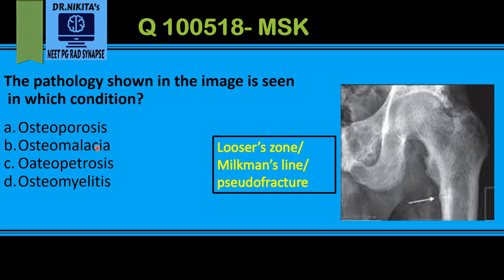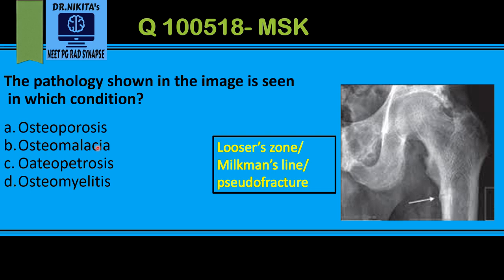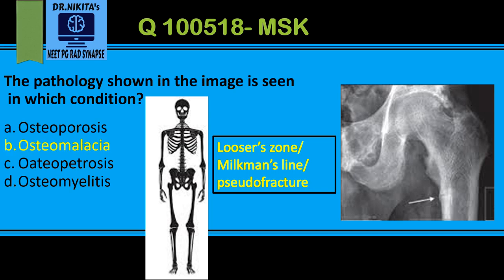Pseudo fractures are seen in osteomalacia. The most common sites are the scapula, the ribs, the pubic rami, and the proximal femur. Generally, these pseudo fractures are bilaterally symmetrical. Remember: Looser zone, Milkman's line, or pseudo fracture of osteomalacia.